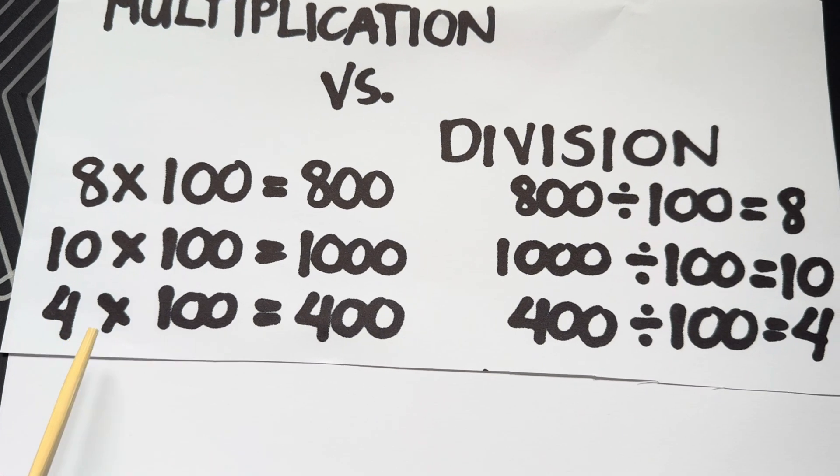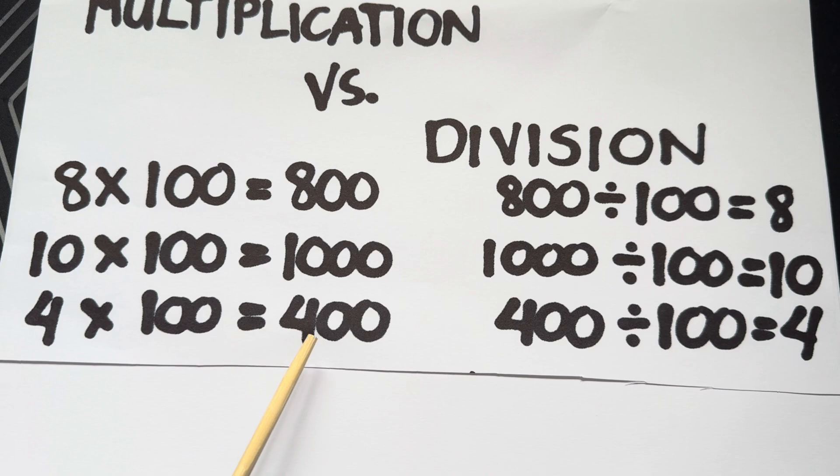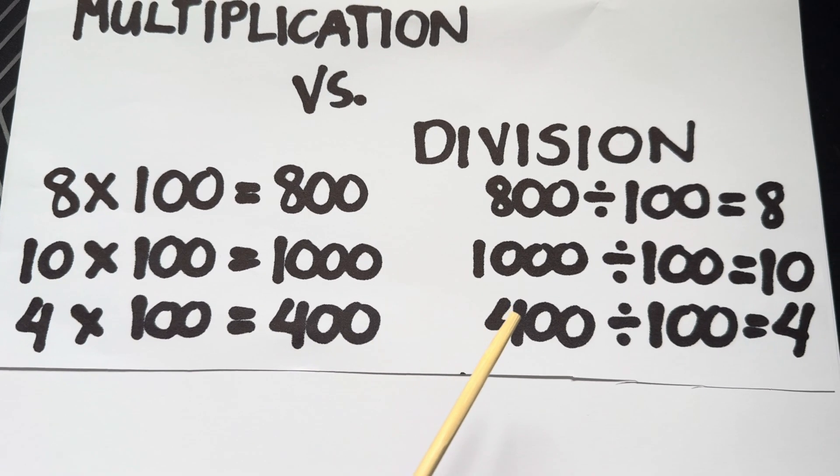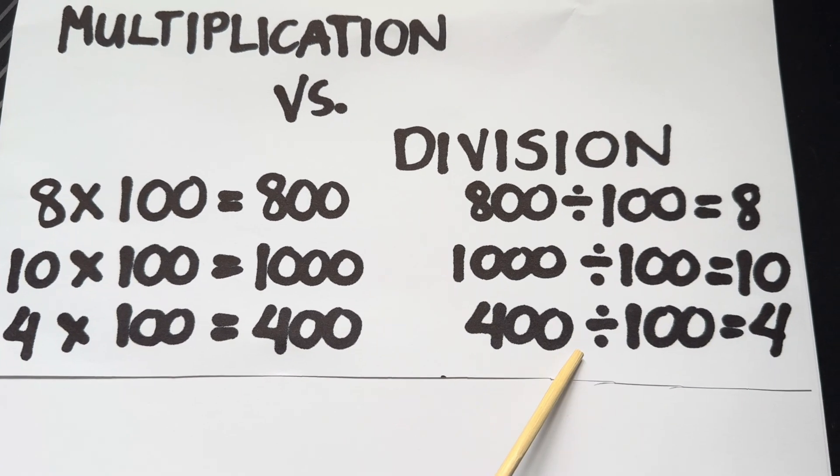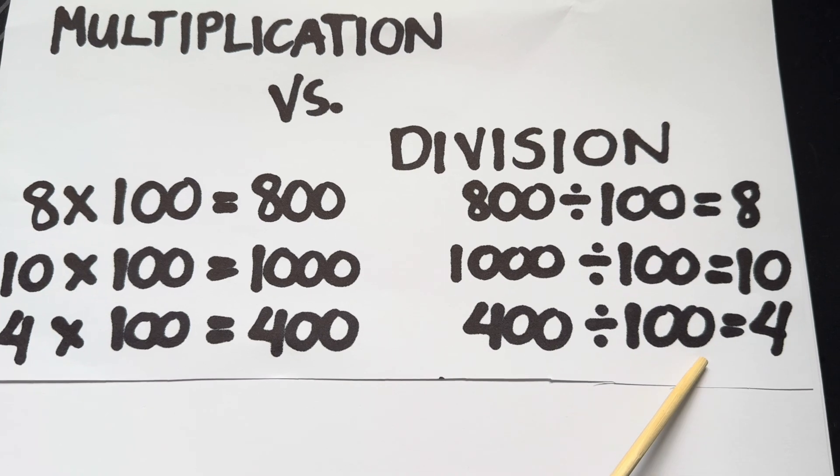4 multiplied by 100 is equals to 4. In division, 4,000 divided by 100 is equals to 4.